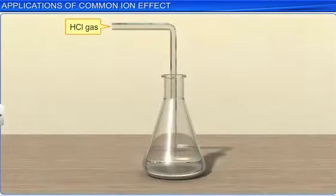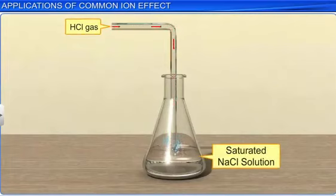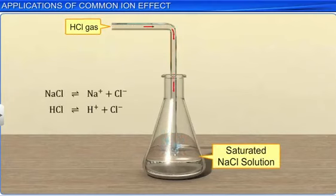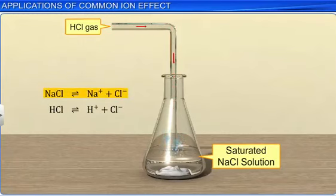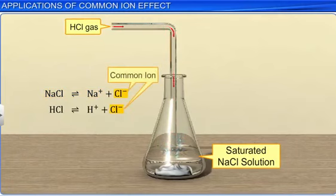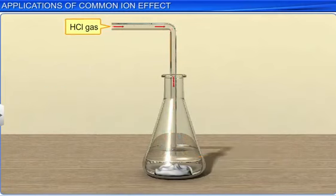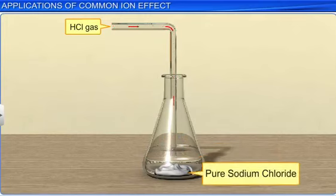When hydrogen chloride gas is passed through a saturated solution of sodium chloride, the precipitation of sodium chloride increases, and dissociation decreases, due to the chloride ion which acts as a common ion. Thus, the sodium chloride obtained is free from impurities.